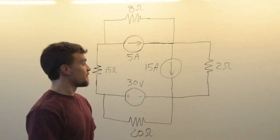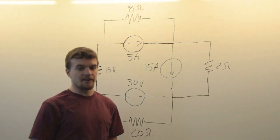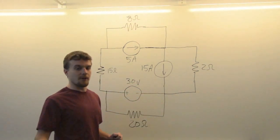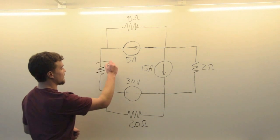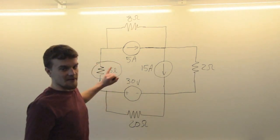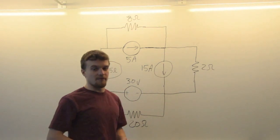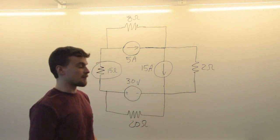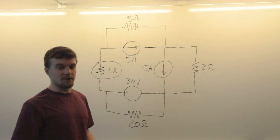Hi, I'm Zach with HKN and today we are solving this circuit using a couple different methods. In particular, we are solving for the power dissipated in that resistor using mesh current analysis and source transformations. So first we'll do mesh current.